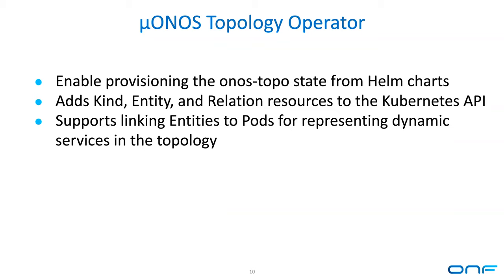One of the reasons I wanted to do the topology operator is that we want to be able to represent not just devices below the control plane inside the topology, but also services within the micro ONOS system. The problem is that in Kubernetes, objects like deployments can auto-scale, so the number of nodes inside a service can change, pod names can change, and trying to represent services and their pods inside the topology requires something managing the topology based on what Kubernetes is doing.